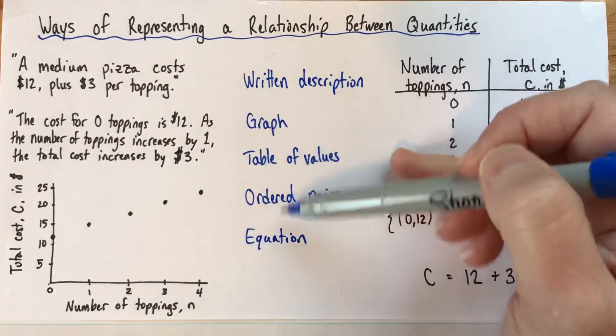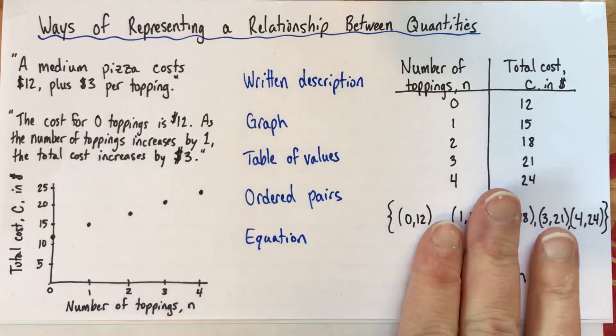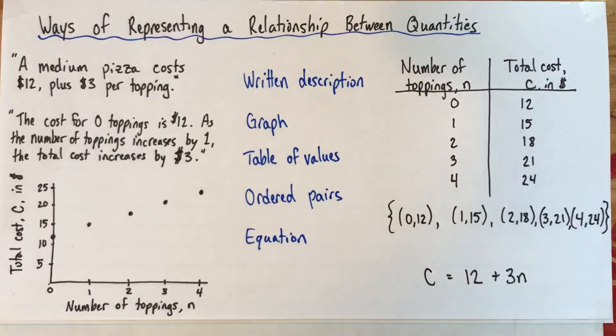So here are five or six, depending on how you count, different ways of representing the same relationship. And each of them is useful, each of them sort of emphasizes a different aspect of the relationship. And one of the ways that you can learn about relationships between quantities is by representing the relationships different ways, and changing from one representation to another. Thanks and good luck.